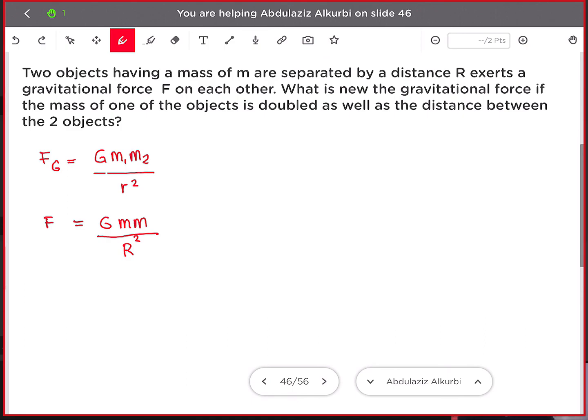So now, what is the new gravitational force if the mass of one of the objects is doubled as well as the distance between them? Meaning to say we double one of the masses and we also double the distance between them. This is how we're going to apply the condition in the problem. So I will have G, I will double one of the M, so I'm going to have 2M multiplied by M divided by 2R squared.